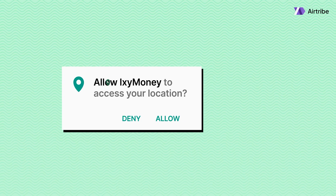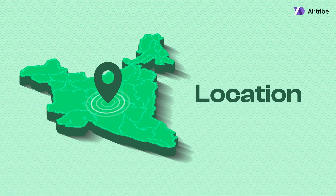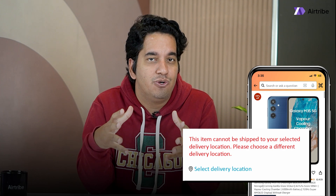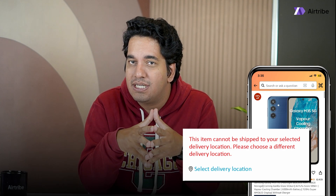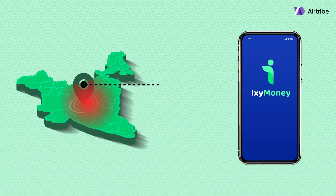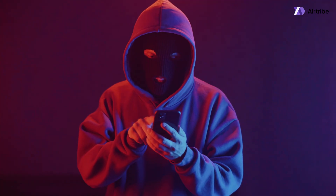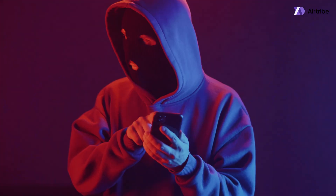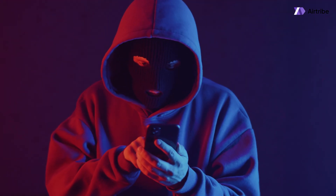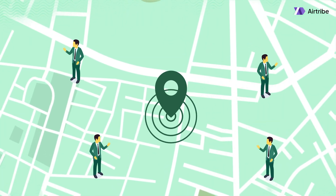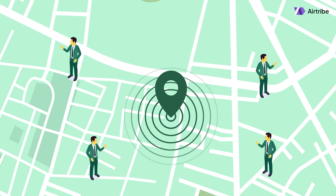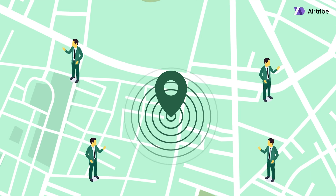First up is location access — this isn't just to track where you are. For example, they use location to see if your area is blacklisted, kind of like how Amazon would not deliver to areas known for scamming COD orders or with a high number of returns. Loan apps avoid giving out loans in areas with high default rates. They are also checking for fraud — there might be a single person applying for different loans from the same location. Interestingly, they also check if they have collection agents in the area from which the loan is being applied.